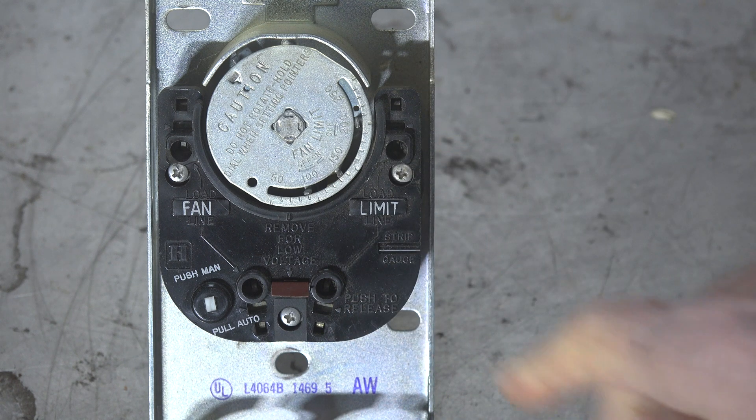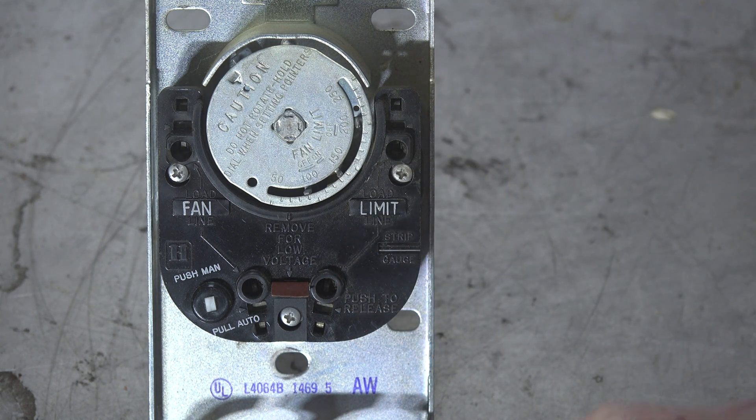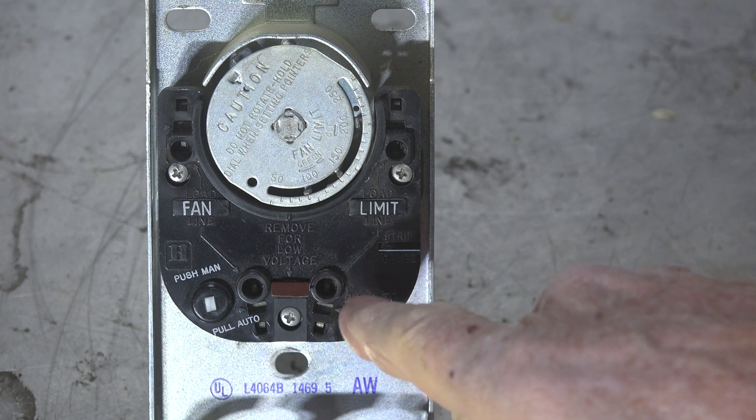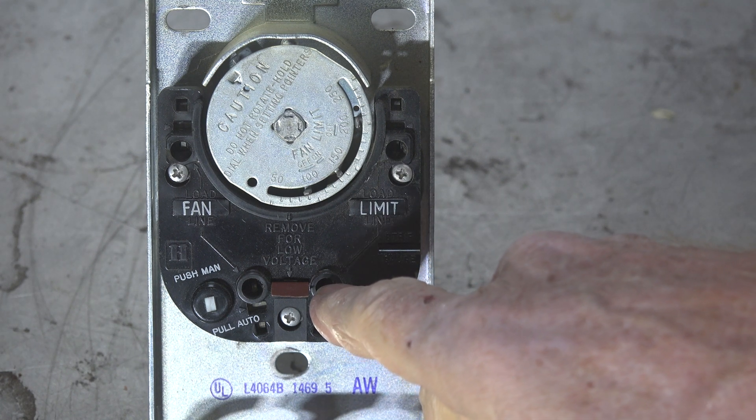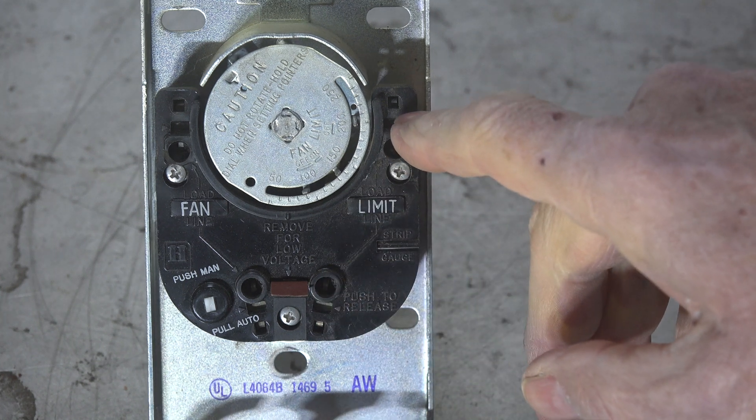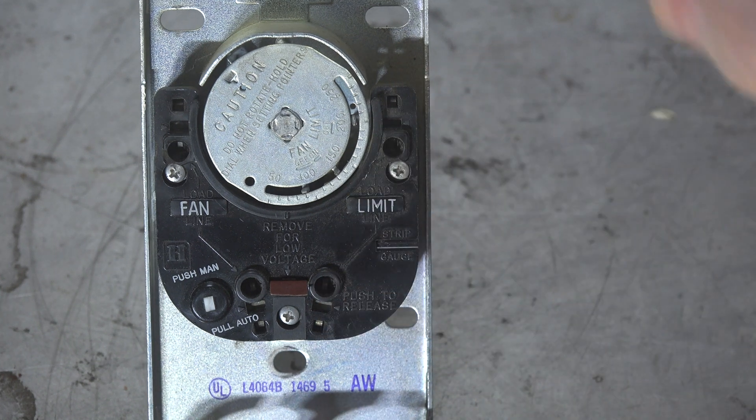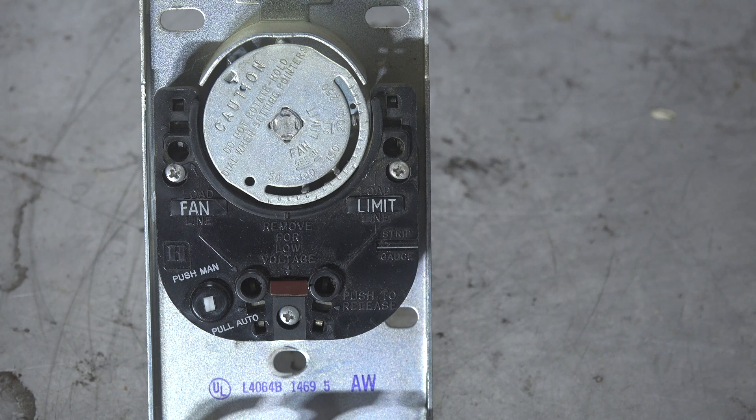Then you take your 24-volt circuit that goes to the gas valve and you interrupt it there. So I would have the power coming from, say, the thermostat would come to here, and then the gas valve would be hooked up here. So that would be in the line; it would shut it down if there was an overheat.